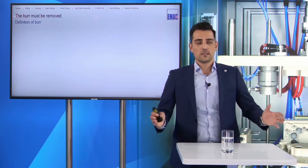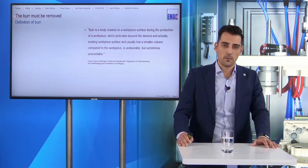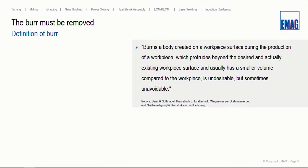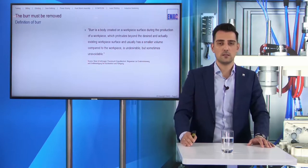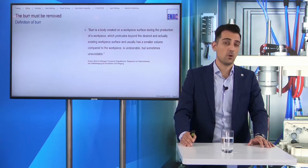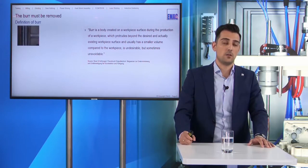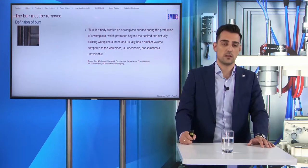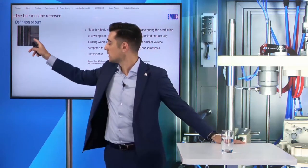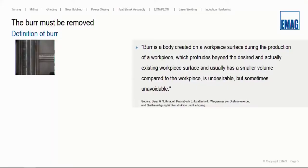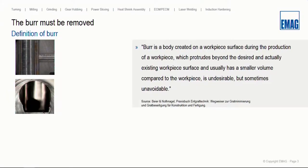So, what is a burr? The definition: a burr is a body created during mechanical machining. This body is much smaller than the main body of the part, and this small burr is undesirable but sometimes unavoidable. For example, when you have a tube and you drill two holes, you get classical intersection burrs — sharp edges directly in that area. Or you can see milling burrs on housing parts. When you look under the microscope you will see very small burrs after drilling a hole.